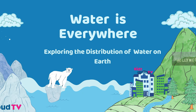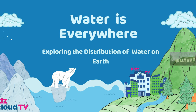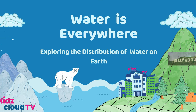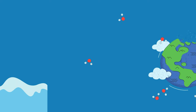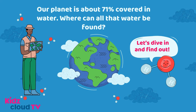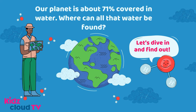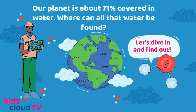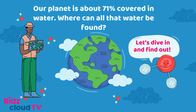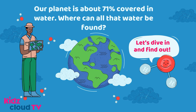Water is everywhere. Exploring the distribution of water on Earth. Our planet is about 71% covered in water. Where can all that water be found? Let's dive in and find out.